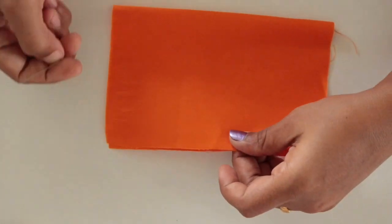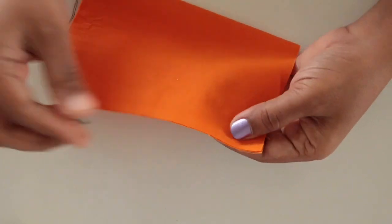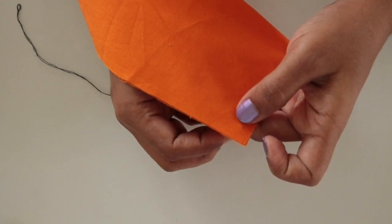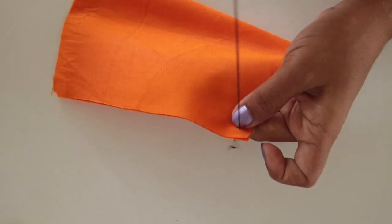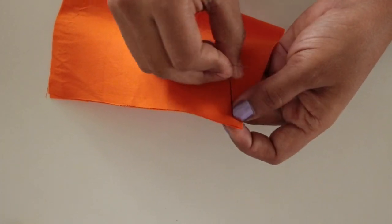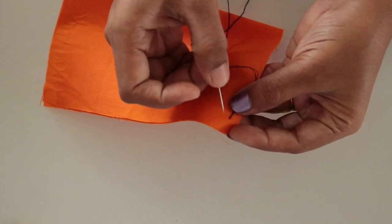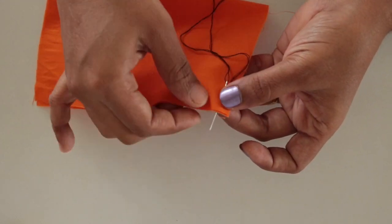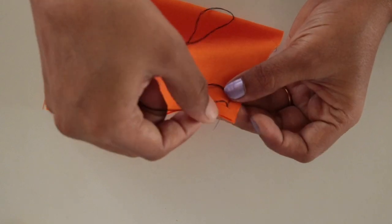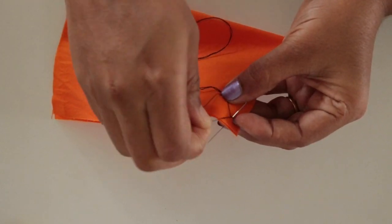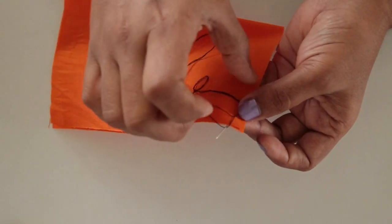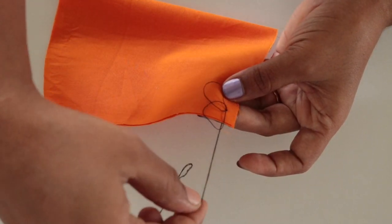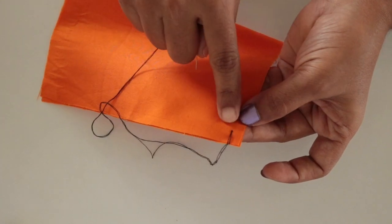Take two layers which you want to overcast. Then bring up the needle to the top of the fabric. Take the needle back from where you came up. Loop the thread back, dividing the two threads through the needle. Now pull the needle and you will have your first overcast stitch.